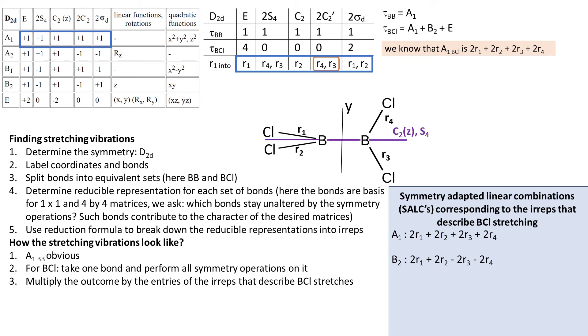For E irrep, we get 2R1 minus 2R2. Now for the E representation, we need to construct two symmetry adapted linear combinations because E irrep is two-dimensional.